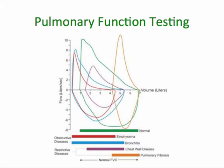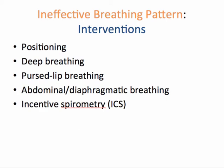In pulmonary function testing, the patient breathes into a spirometer and values are obtained regarding lung volumes and capacities. A flow volume loop is constructed by the patient inspiring and expiring, showing the flow of oxygen during inspiration and expiration as well as the volume of expiration. Overall, the flow volume loop provides information about obstructive diseases and restrictive diseases. Interventions for ineffective breathing pattern include positioning, deep breathing, pursed lip breathing, abdominal or diaphragmatic breathing, and incentive spirometry.